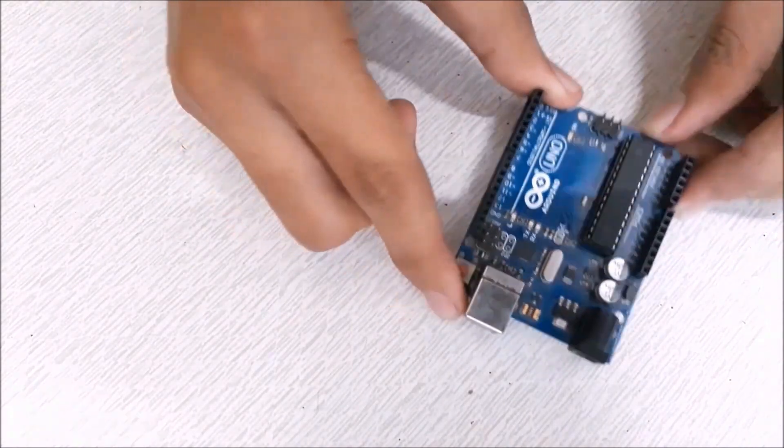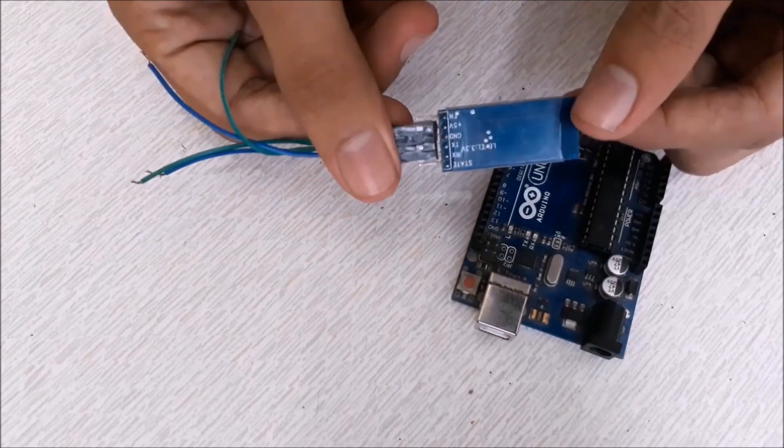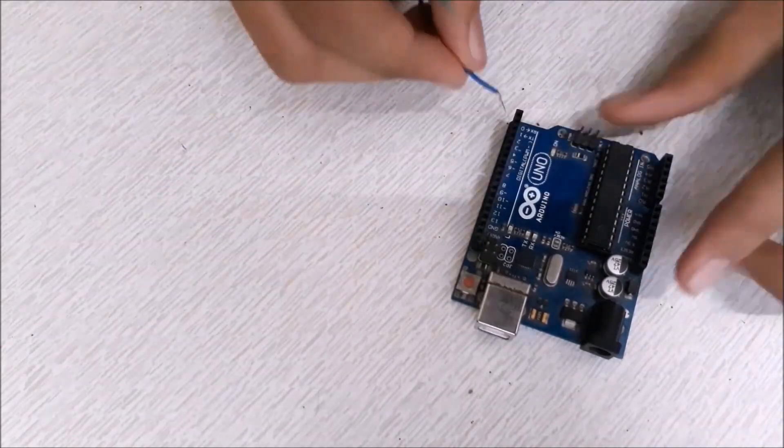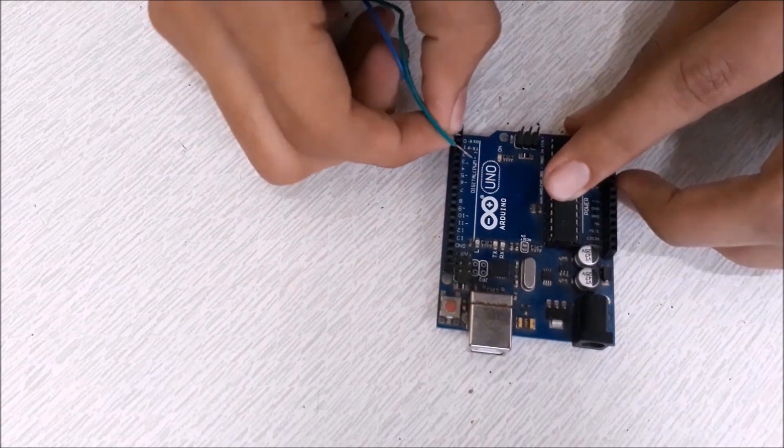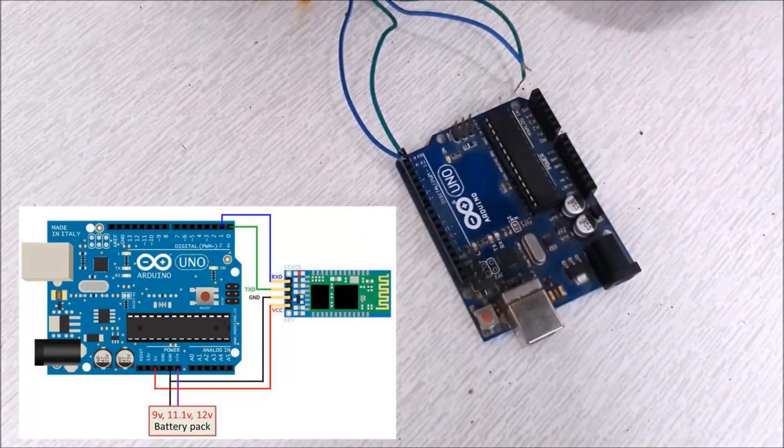You will also need an Arduino and HC05 Bluetooth module. Start by connecting the RXT pin on HC05 to TX pin on Arduino. Then connect the TXT pin on HC05 to RX pin on Arduino.